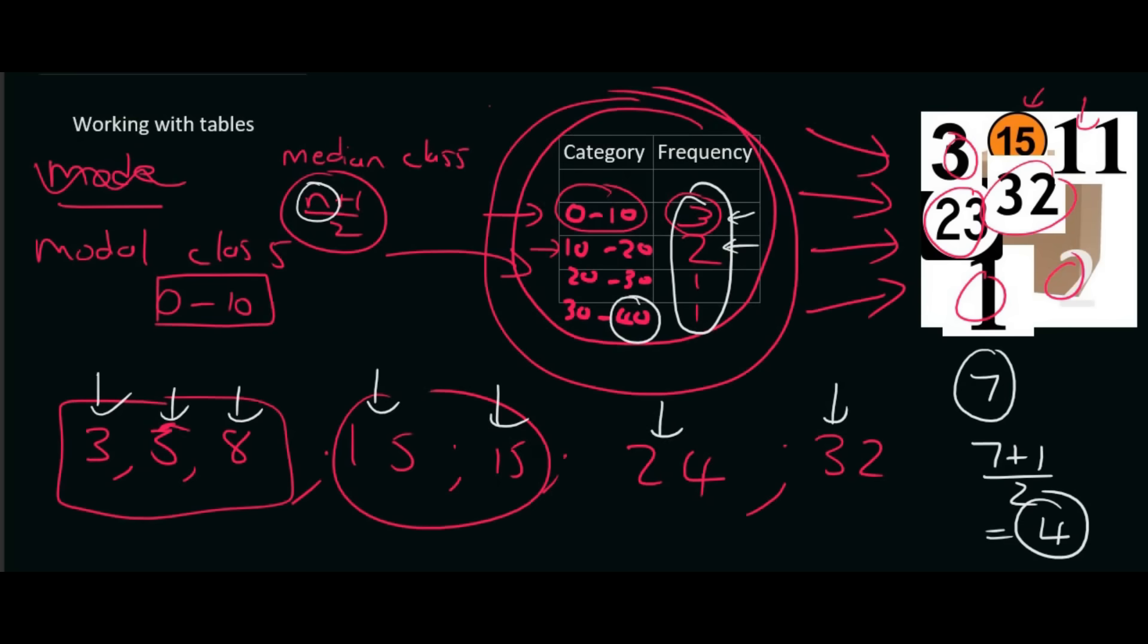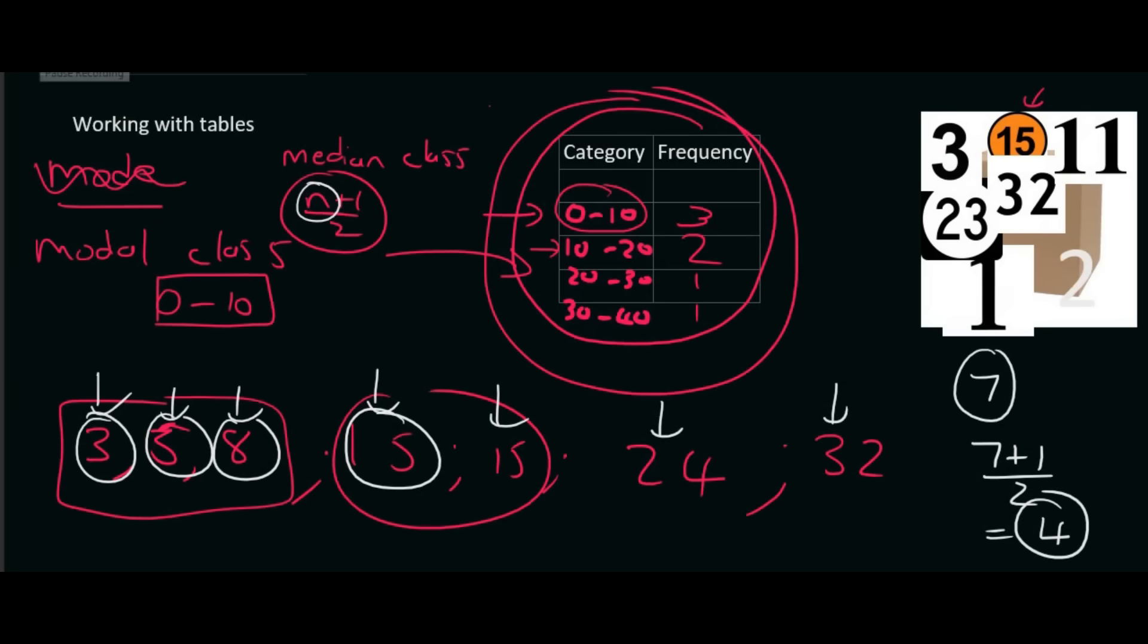So what you would normally do is you'd go number 1, 2, 3, 4, and you'd get to 15. So we need to find the 4th number. Well, that's going to be somewhere inside this category. That's going to be somewhere in this category over here. Because the 0 to 10 has 3 numbers, so the 4th number would be somewhere in this category. So the median class will be 10 to 20.